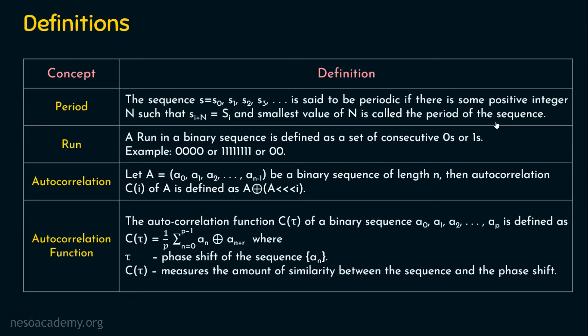For example, if 010 is repeated — 010, 010, 010 — then this 010 is considered to be a period. Don't worry about this now; when we see an example, I will explain this.